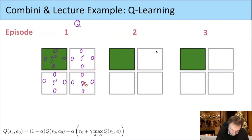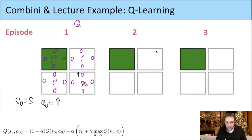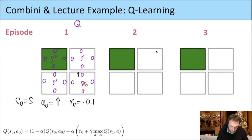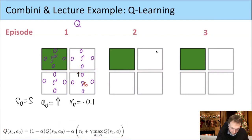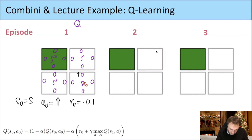The reward we get is minus 0.1, so R0 = minus 0.1. The formula tells us to update Q(S0, A0). The new value is (1 - alpha) * old value + alpha * new value. The old value is zero. R0 is minus 0.1, and if we take the discount gamma equals one, the maximum Q value at the new state is zero. So the updated value is alpha times minus 0.1.